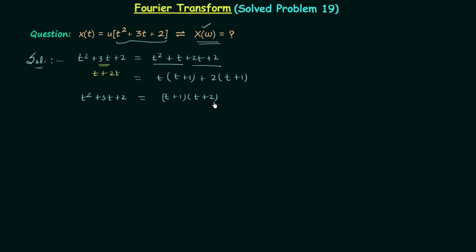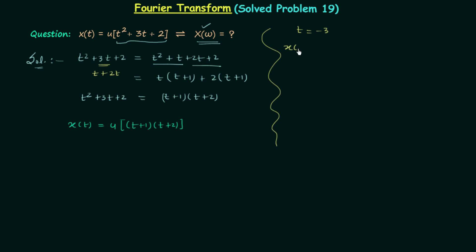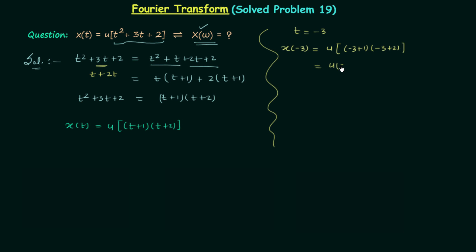So t²+3t+2 can be written as (t+1)(t+2), meaning signal x(t) = u((t+1)(t+2)). Now we will put t equal to -3, t equal to -1.5, and t equal to 1.5 to get some idea about the signal waveform. When t=-3, x(-3) = u(-3+1) × (-3+2), which gives u(2). Since t is positive here, u(t) equals +1.